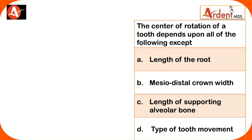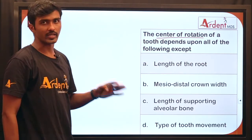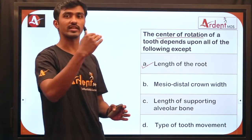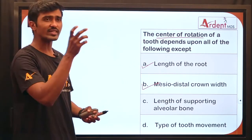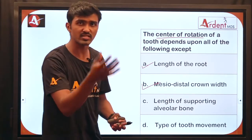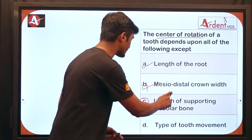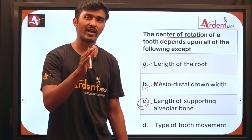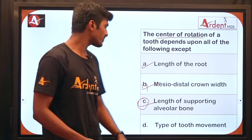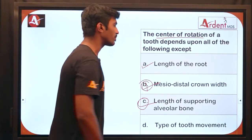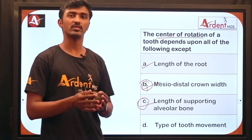Review question 3: The center of rotation of a tooth depends on all of the following except one. Root length affects center of resistance and center of rotation. Length of supporting alveolar bone — which is the height of the alveolar crest — is also a factor. Type of tooth movement affects center of rotation: tipping has one center of rotation and torquing has a different one. However, the mesiodistal dimension of the crown does not have anything to do with the location of center of rotation — that is the exception answer.